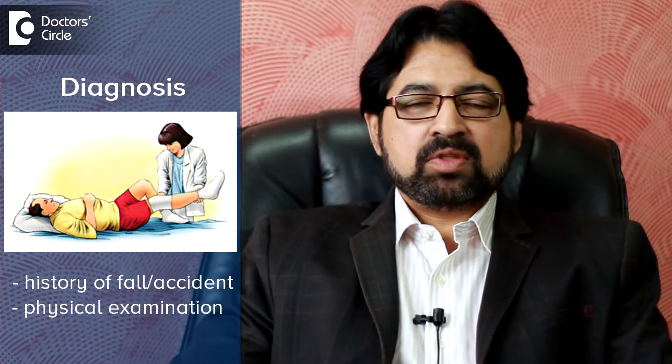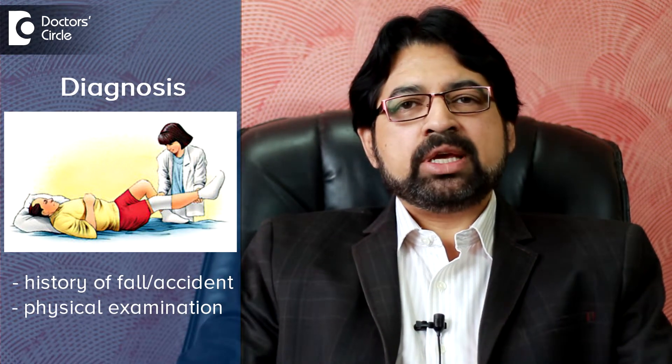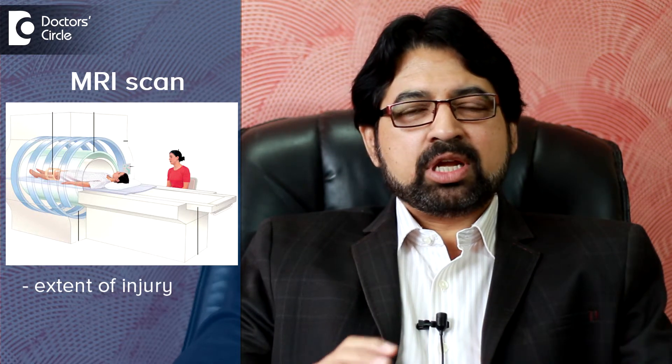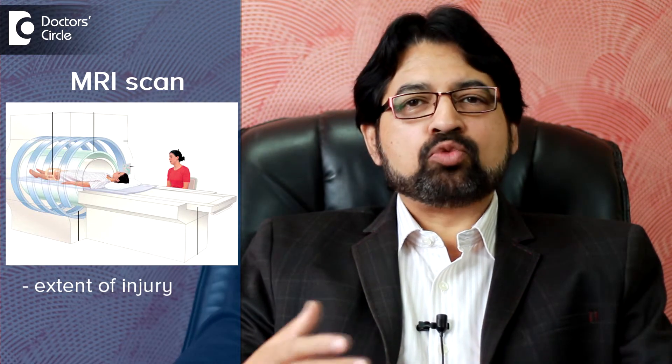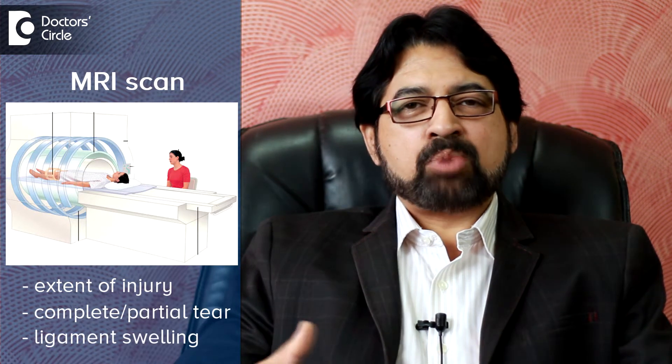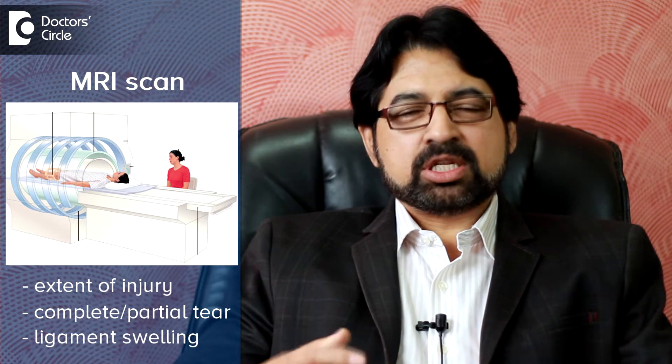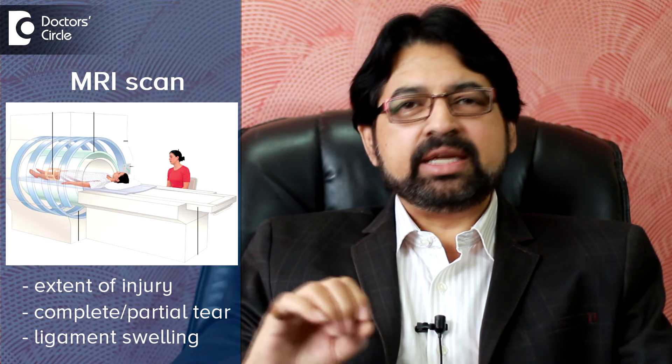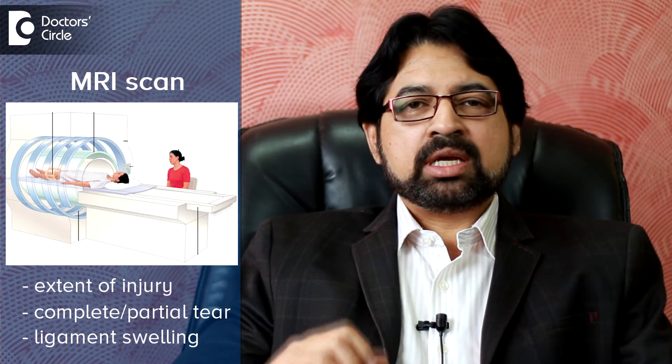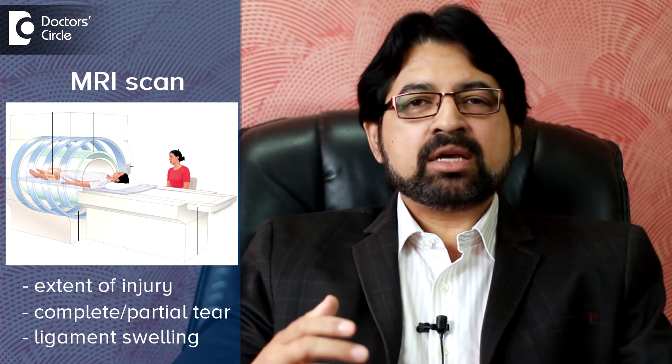However, the best way to diagnose a ligament injury is to do an MRI scan — magnetic resonance imaging. This gives cuts of the body of a joint and shows clearly whether a ligament injury has occurred, and if so, to what extent — whether it's a complete tear, partial tear, or only a swelling of a ligament. Everything is clearly delineated so that decision making regarding the treatment becomes very easy.